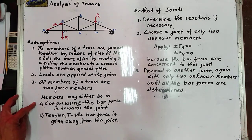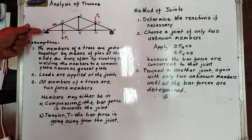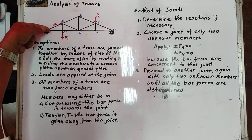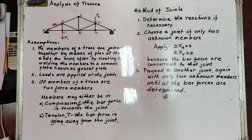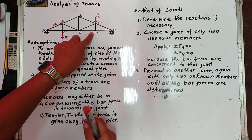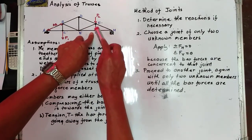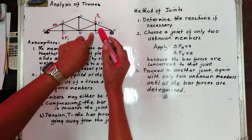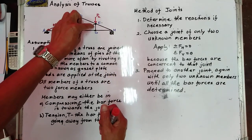Compression occurs if the bar force is towards the joint, and tension if the bar force is going away from the joint. Now we have zero-force members. When only two members form a non-collinear truss joint and no external load or support reaction is applied to the joint, then the members must be zero-force members. At joint G, FG is a zero-force member.